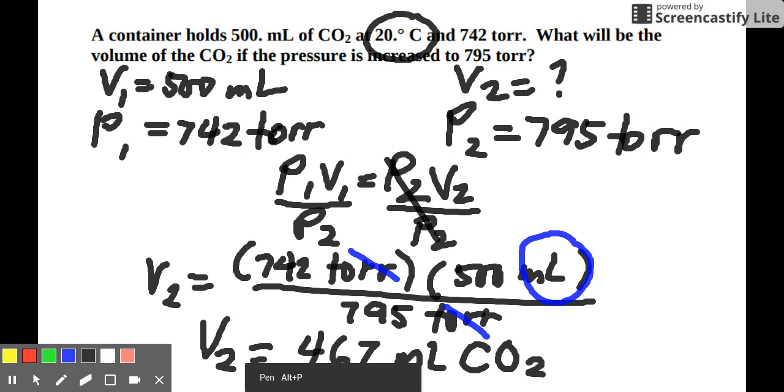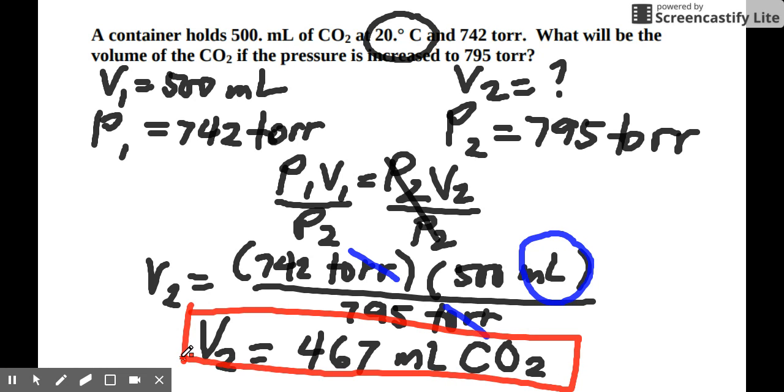So the final answer is, final volume becomes or changes to 467 ml of carbon dioxide when the pressure is increased. So you would expect, because this is inverse relationship, check whether your answer is correct. You know that it's an inverse relationship, because pressure is increased, therefore your volume should decrease.